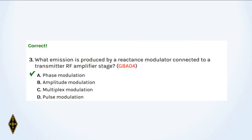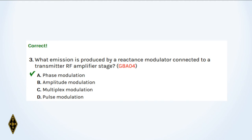Number three: What emission is produced by a reactance modulator connected to a transmitter RF amplifier stage? That's phase modulation. Frequency modulation is connected to an oscillator stage at the very beginning. Phase modulation is connected later on to an amplifier stage, so phase modulation.